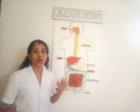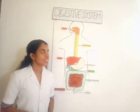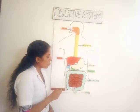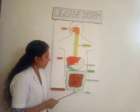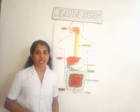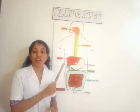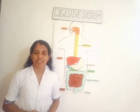Digestion takes place in a number of steps with the help of different organs of our body. These organs together form the digestive system — an organ system that helps in the digestion of food. The digestive system consists of mouth, esophagus, stomach, small intestine, large intestine, and anus. There are also three glands associated with it: salivary glands in the mouth, liver, and pancreas.